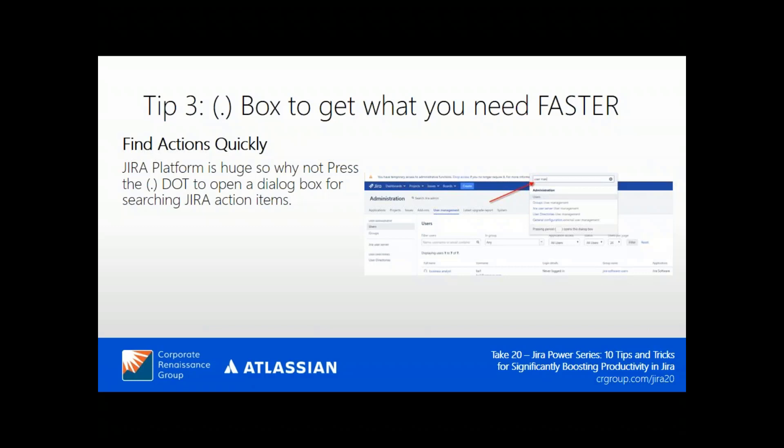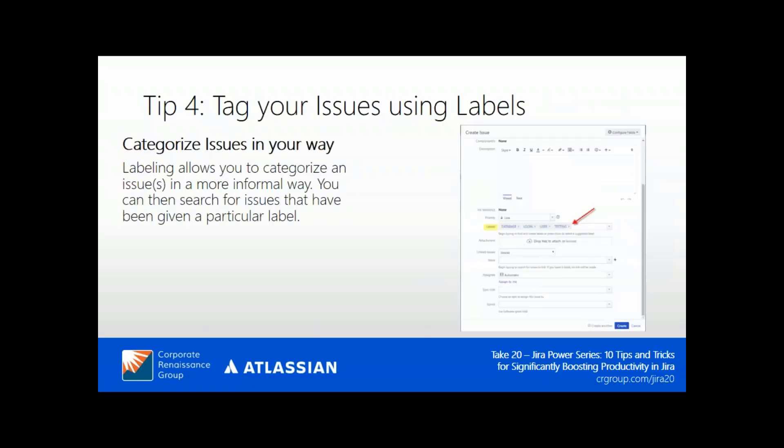Tip three: use the dot box to get what you need faster. You can just press the dot key on your keyboard and it opens up a dialog box. You can start typing actions — for example, user management, permissions, and many more — and JIRA will dynamically suggest those options, letting you jump directly to that page. It's a huge win given how large the JIRA platform is.